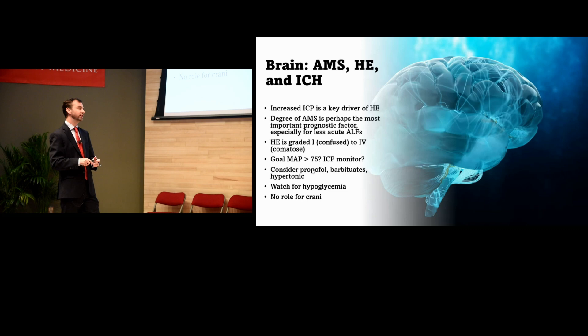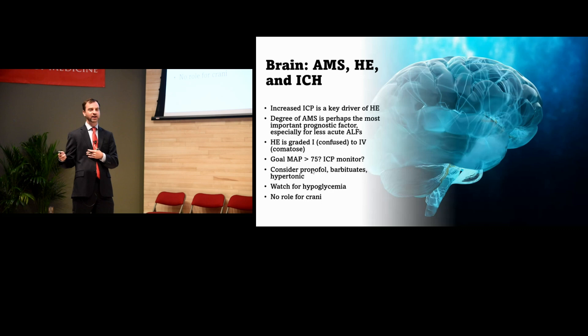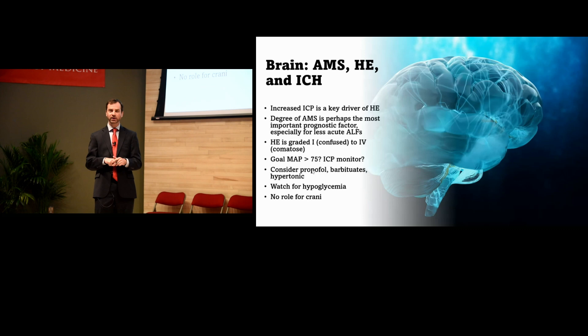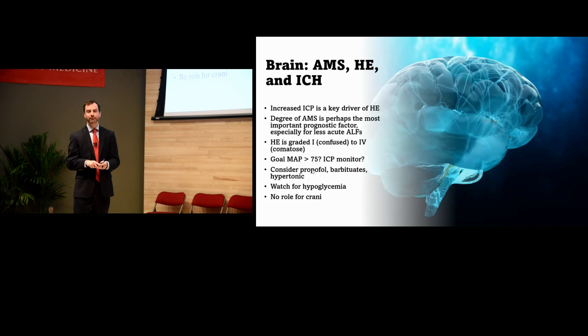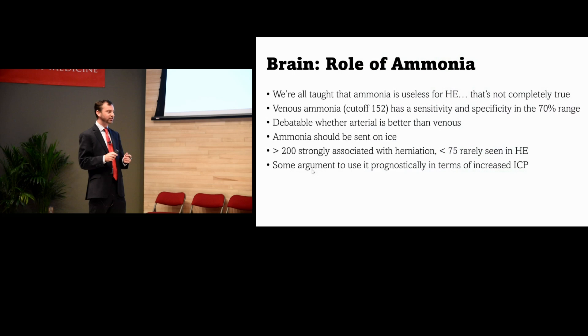Hepatic encephalopathy is graded one to four — slightly confused is a one, totally comatose is a four. There are arguments for higher MAP goals though data is limited. Management aligns with standard increased ICP management: propofol, barbiturates, sit them up, head of bed elevated. Watch for hypoglycemia — if they've progressed to hepatic encephalopathy, do not let them be hypoglycemic when blood reaches the brain.